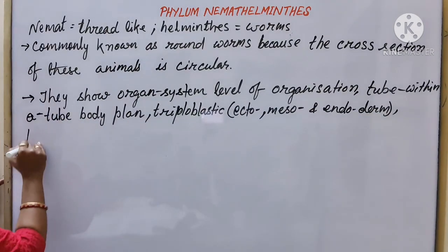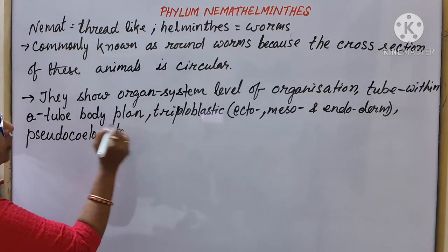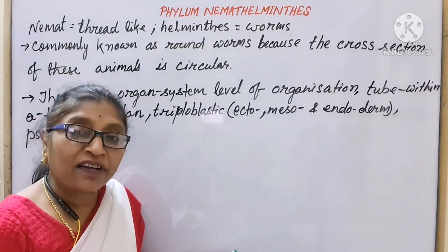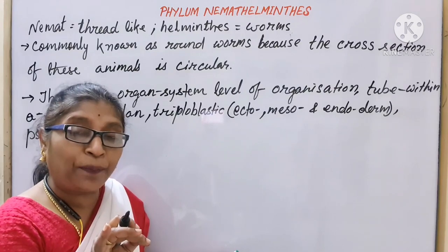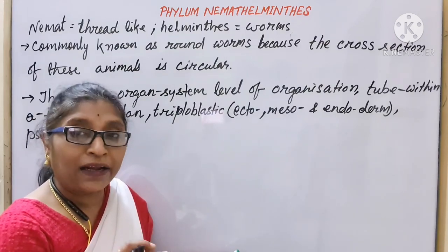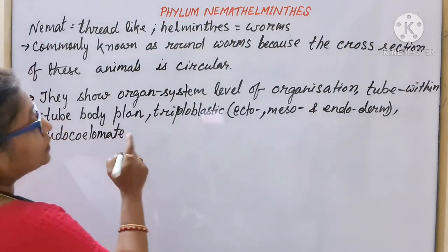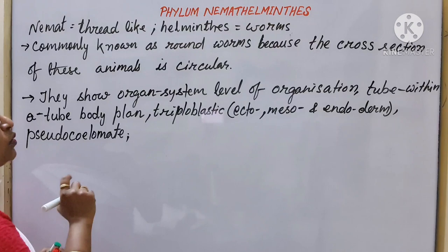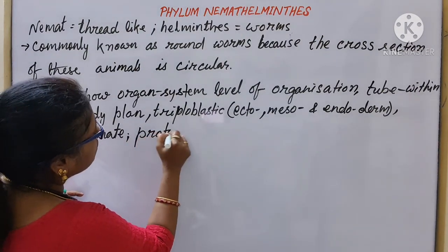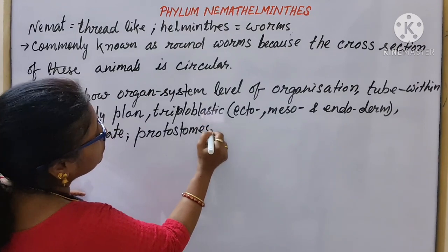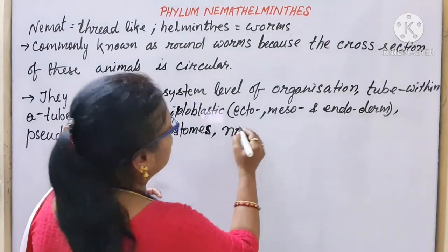These animals are pseudocoelomate — a false coelom is present. They are protostomes, meaning the mouth develops first. These animals are non-segmented; no segmentation is found.